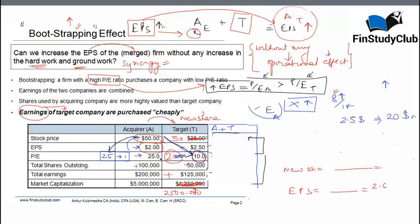Now, how much is the worth of the target? The worth of the target has suddenly doubled and my acquirer stock price remains the same. Therefore, exactly double the number of shares will have to be issued. So the new shares will be 100,000 plus 50,000, which is 150,000. There is no operational efficiency at all; the total earnings remain at 325,000. So my 325,000 divided by 150,000 shares is now no more coming as 2.6. It is gone down to 2.17.